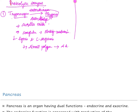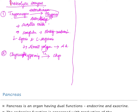The next enzyme is chymotrypsinogen, the inactive form, which is converted into chymotrypsin by trypsin. Chymotrypsin digests proteins into small polypeptides.